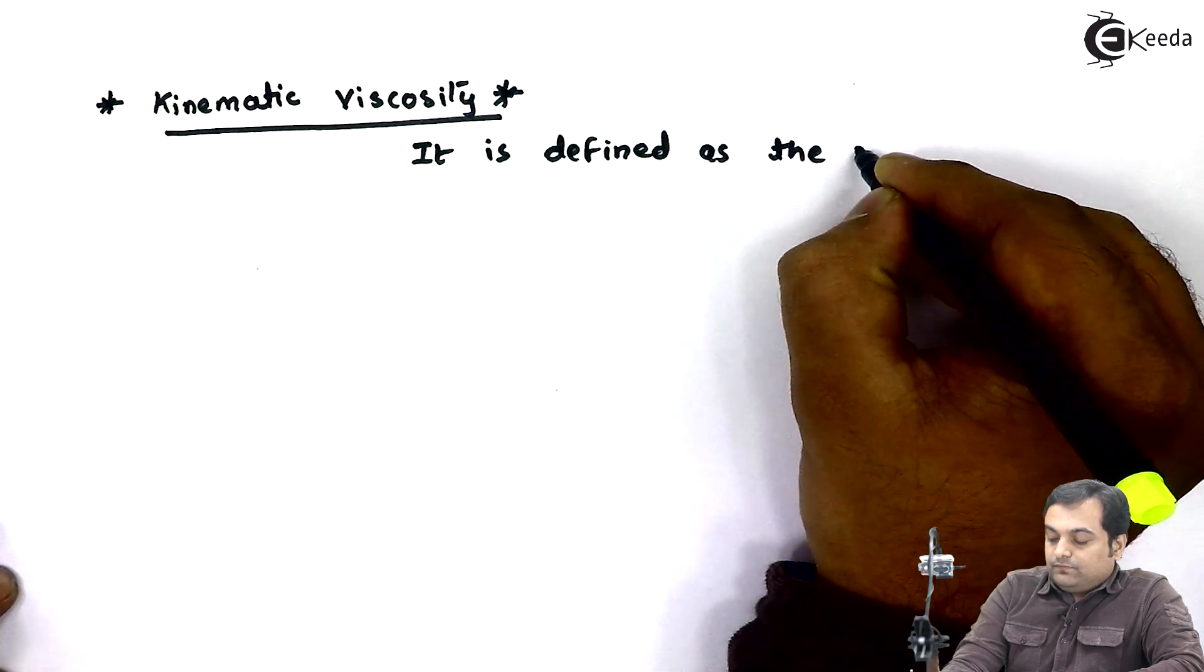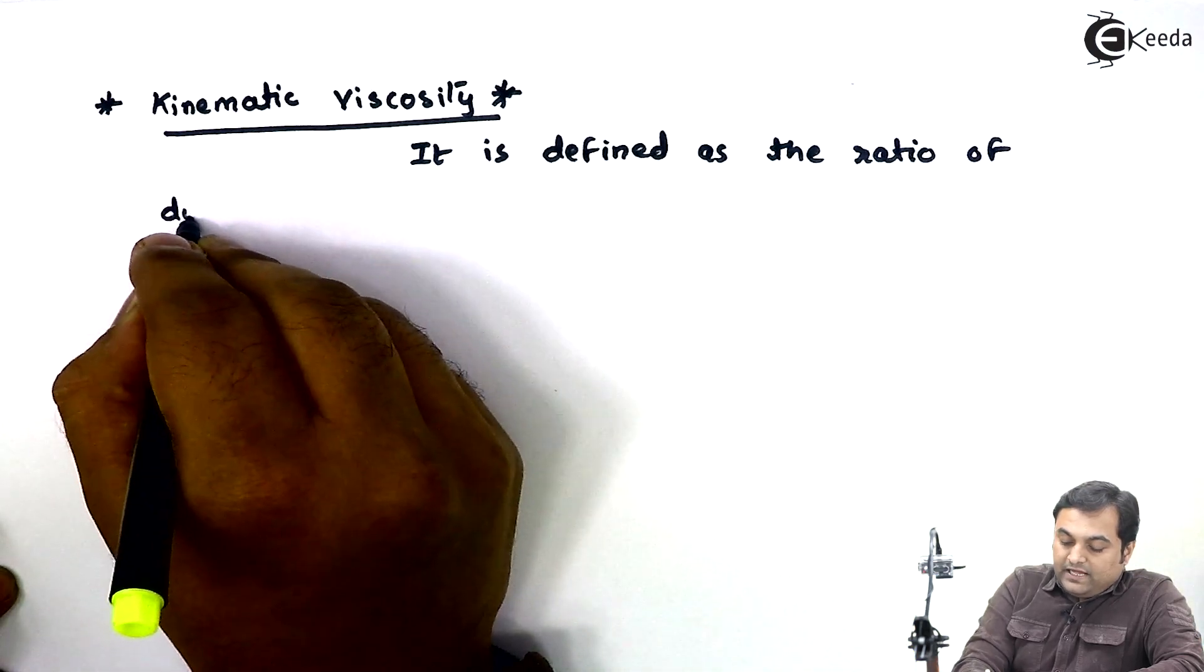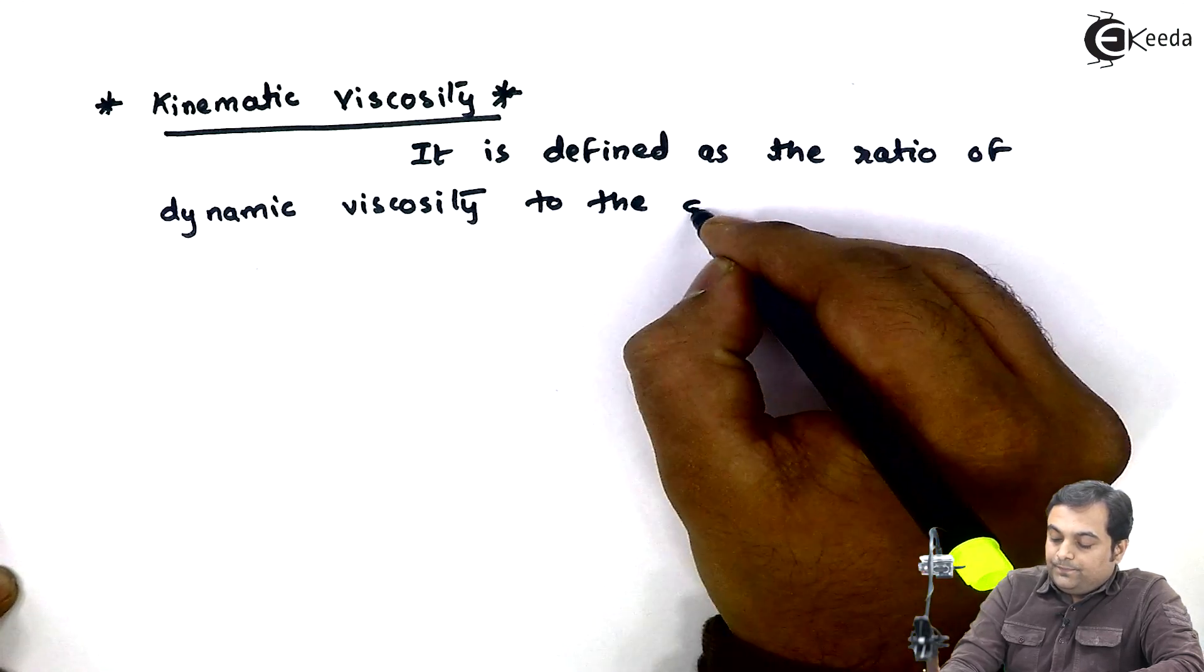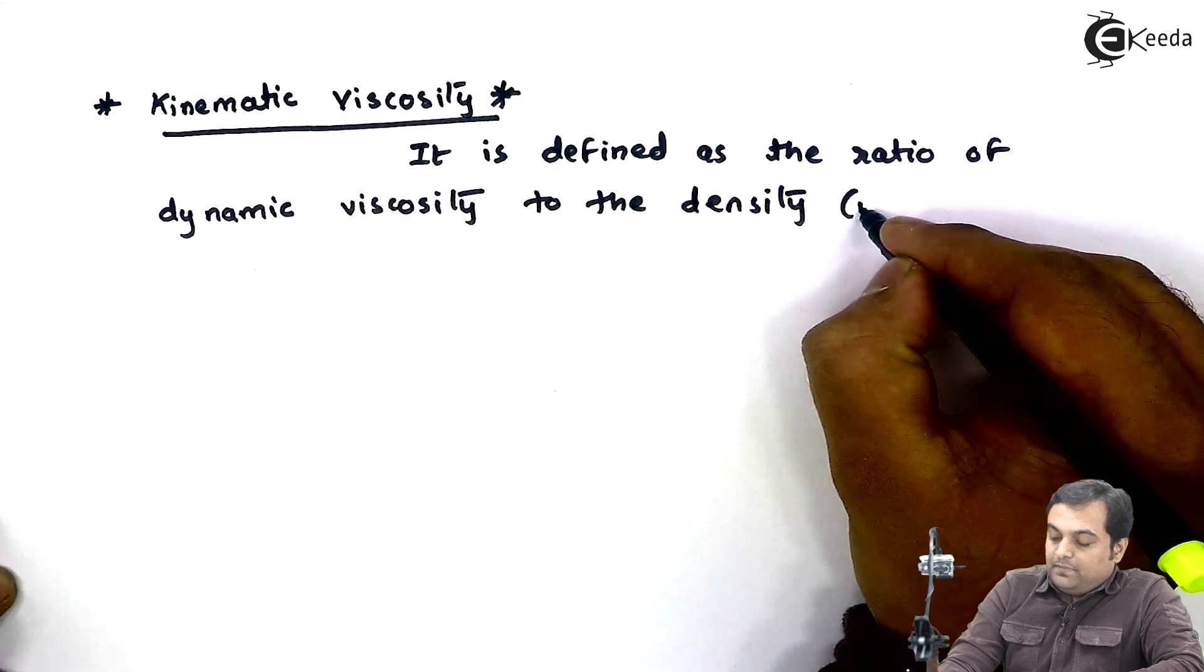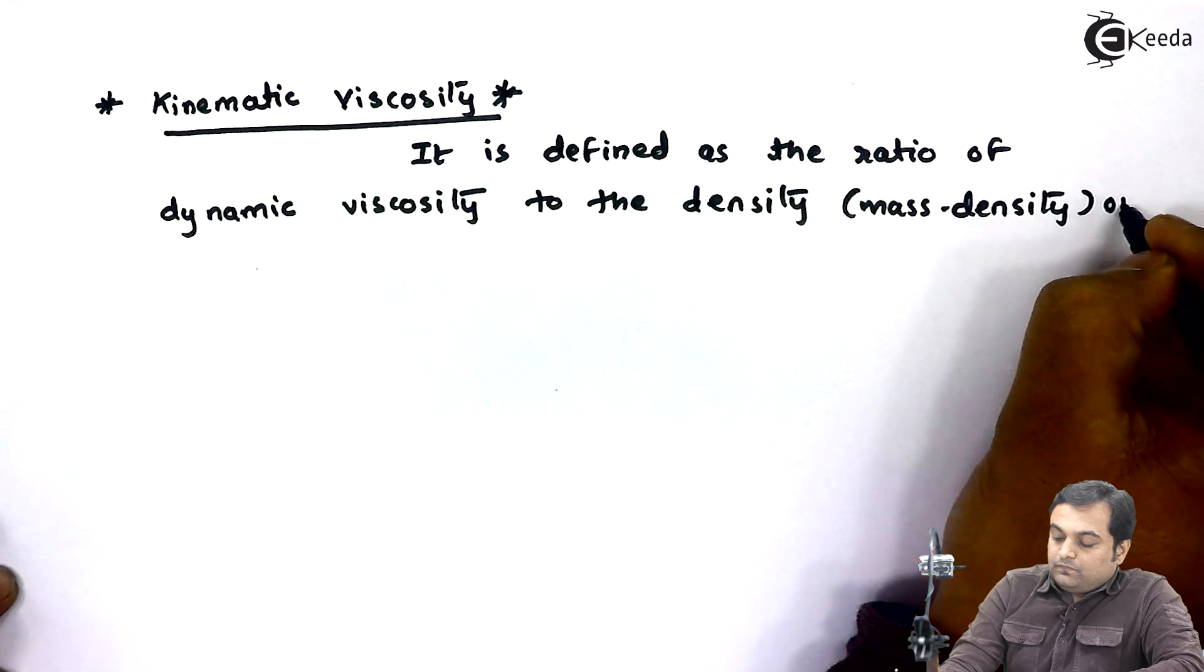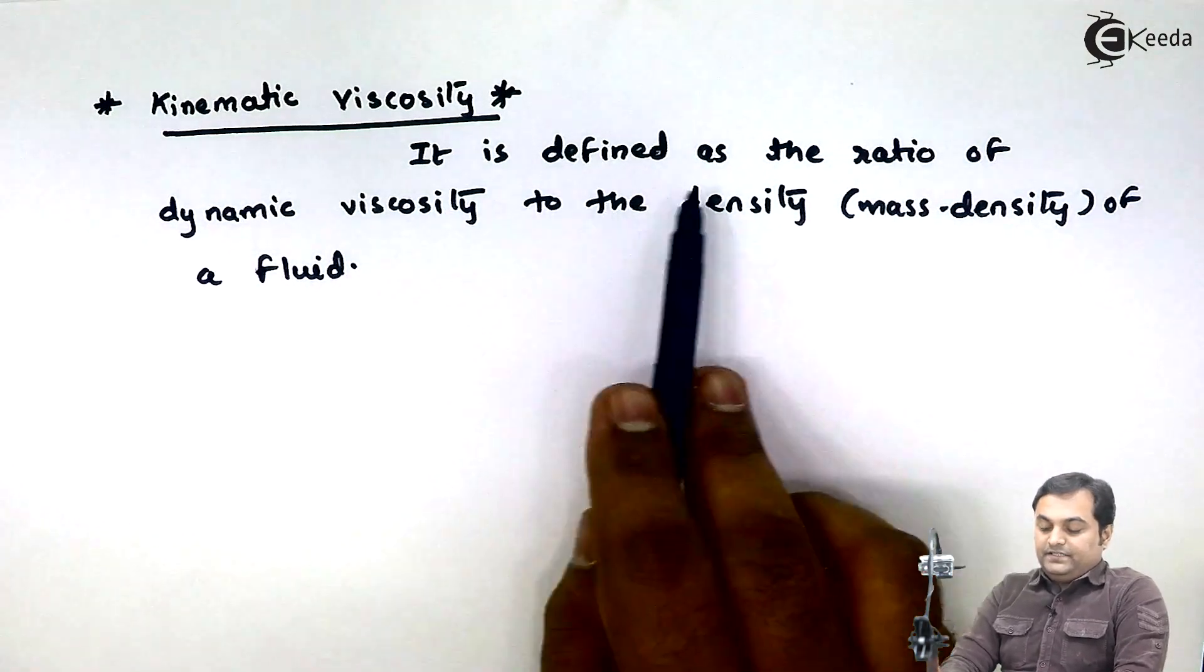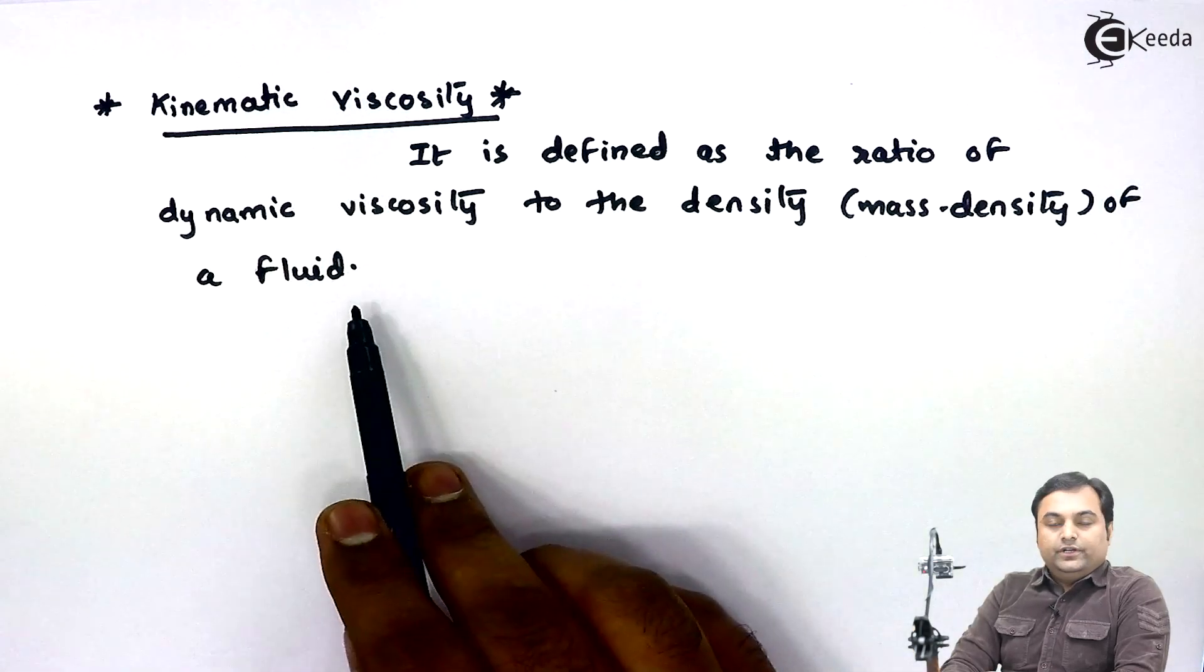the ratio of dynamic viscosity to the density. Here if I write density, it is mass density of a fluid. So kinematic viscosity is defined as the ratio of dynamic viscosity to the density of fluid.